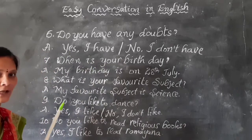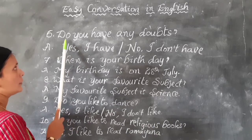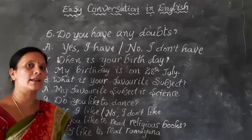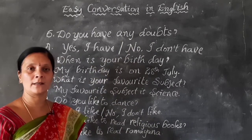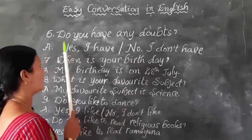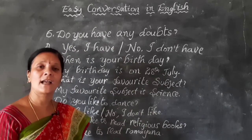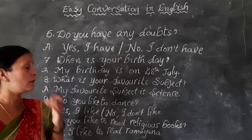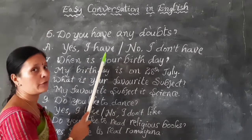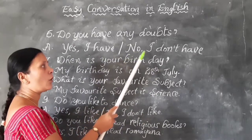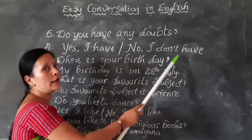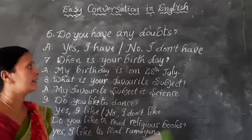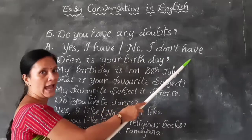Now some more dialogues. When your teacher finishes explaining a lesson, she may ask: Do you have any doubts? If you have a doubt, say: Yes, I have. If you have no doubt, say: No, I don't have. If the whole class answers together: No, we don't have.